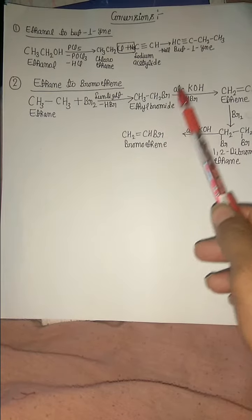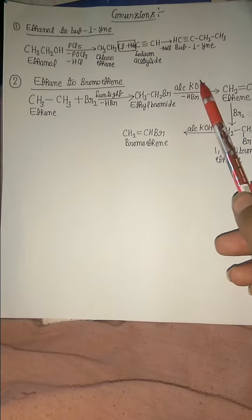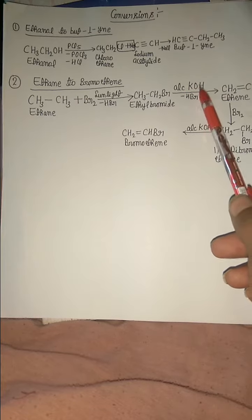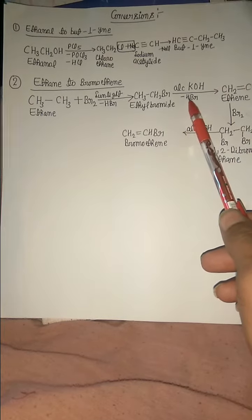Ethyl bromide reacts with alcoholic KOH and again loses one hydrogen bromide molecule to form ethene. Ethene then reacts with bromine to form ethyl dibromide.